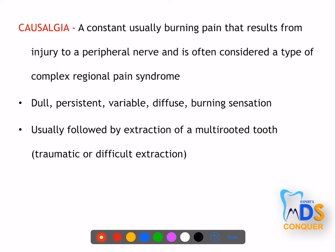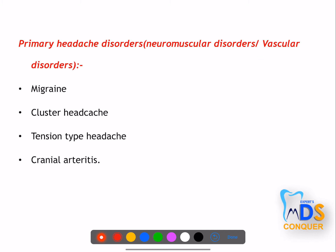Causalgia results from constant injury to a peripheral nerve and is considered a type of complex regional pain syndrome. After traumatic extraction of a multi-rooted tooth, if the patient complains of a dull, persistent, diffuse type of pain, it is causalgia — occurring due to injury to peripheral nerve fibers.